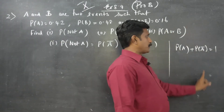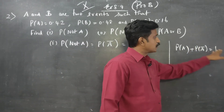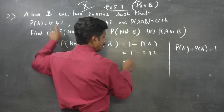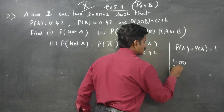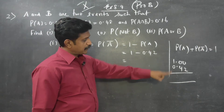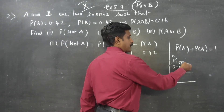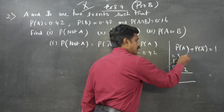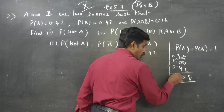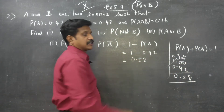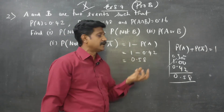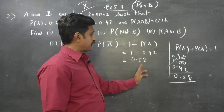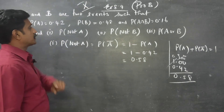Now, probability of A plus probability of A dash is equal to 1. So probability of A dash is equal to 1 minus P(A), which is equal to 1 minus 0.42, giving us 0.58. All probability answers will be less than 1. So the answer for not A is 0.58.